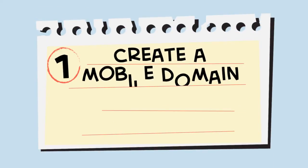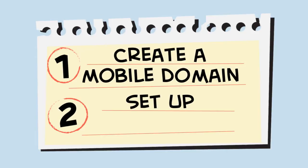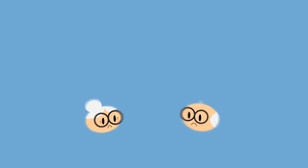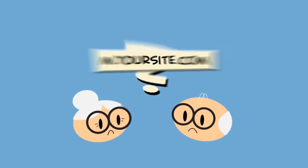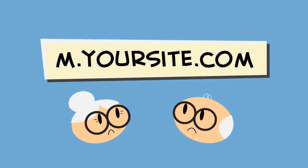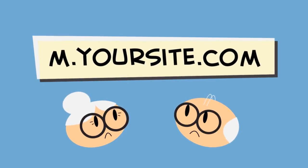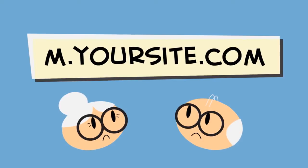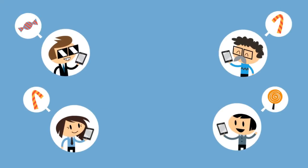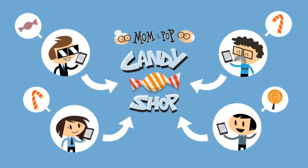First, they need to create a mobile domain for their new mobile website, then set up redirection. A mobile domain is a domain dedicated to a mobile website. A dedicated mobile domain gives Mom and Pop's mobile site a clean, simple URL and helps users find them more easily.